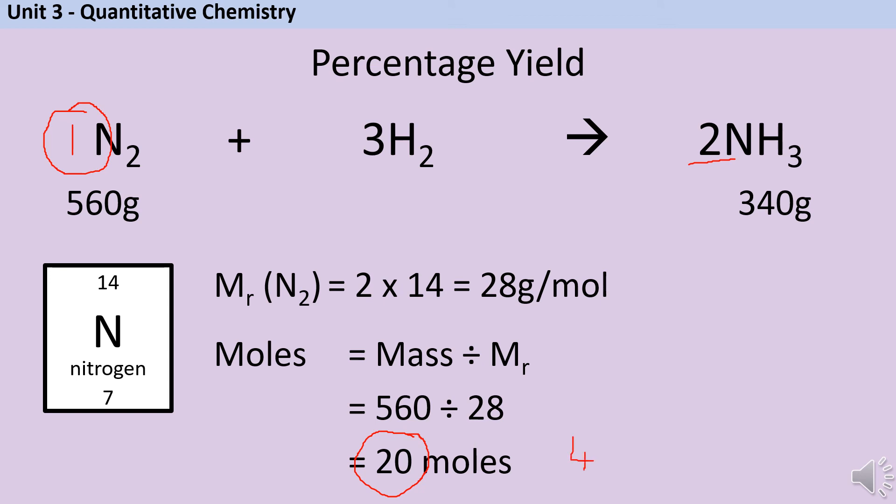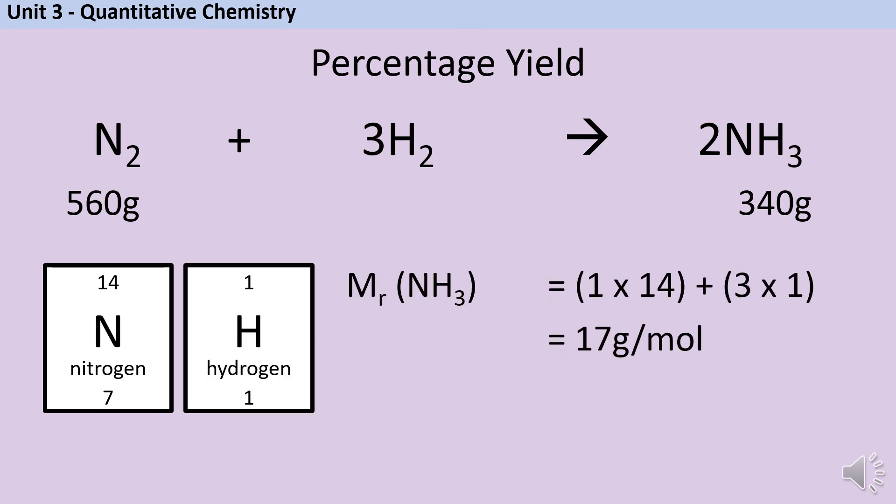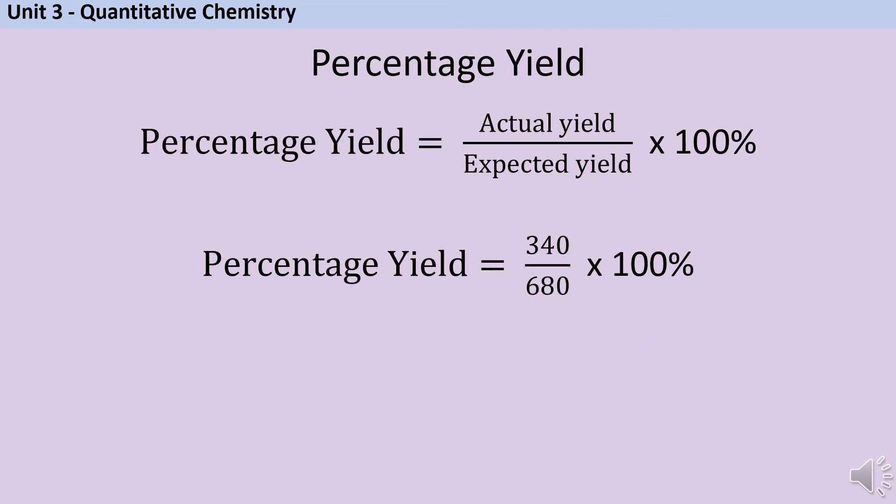Now to work out how much that's going to weigh, I need the relative formula mass of ammonia too. So the Mr of ammonia is going to be 1 times 14 for the mass of nitrogen, plus 3 times 1 for the mass of hydrogen, which comes out at 17 grams per mole. We've just said we'll have twice as much ammonia as we do nitrogen, so 2 times 20 times by 17, which is the Mr, and that comes out at 680 grams. So now I can plug those numbers back in. 340 divided by 680 times 100% gives me a percentage yield of 50%.